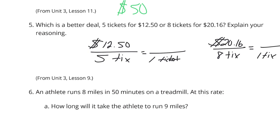For the $12.50 and five tickets, if we divide the $12.50 by the five tickets, we get $2.50. If we divide the $20.16 by the eight tickets to see how much each ticket costs, we end up with $2.52. So $2.50 for one ticket costs less than $2.52 per ticket. And so the better deal is going to be the five tickets for $12.50.